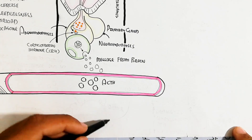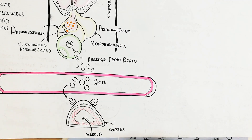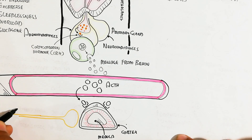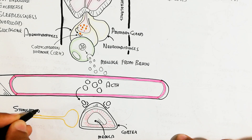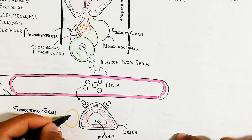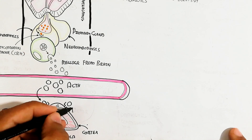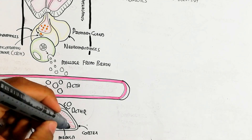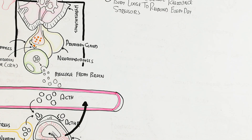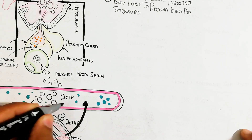ACTH is released into the blood circulatory system and travels to target the adrenal cortex — not the medulla. Additionally, a quick response to stress stimuli activates adrenergic neurons via the same mechanism. ACTH targets the adrenal cortex, and this quick response occurs in situations like sudden fear or running away from a sudden attack.